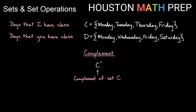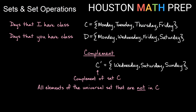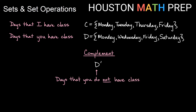Going back to our sets C and D, we want to illustrate the complement. The complement is usually denoted with a little apostrophe next to the set name. So this is read as the complement of set C. The complement of a set is simply all elements in the universal set that are not in set C. Since our universal set is days of the week, I think about what days of the week are not in set C. I notice I don't have class on Wednesday, Saturday, or Sunday. So my C complement is Wednesday, Saturday, Sunday. If I look at D complement — D is the days you have class — so D complement would be the days you do not have class. In that case, you don't have class on Tuesday, Thursday, and Sunday.